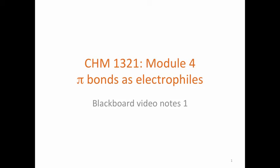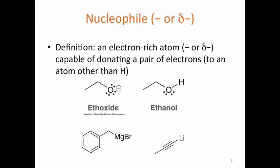In this video we're going to discuss how pi bonds can react as electrophiles. First we're going to start with a couple of definitions. A nucleophile is an electron-rich atom that has a negative charge, or a delta-negative charge, and is capable of donating a pair of electrons. It will donate that pair of electrons to an atom other than hydrogen.